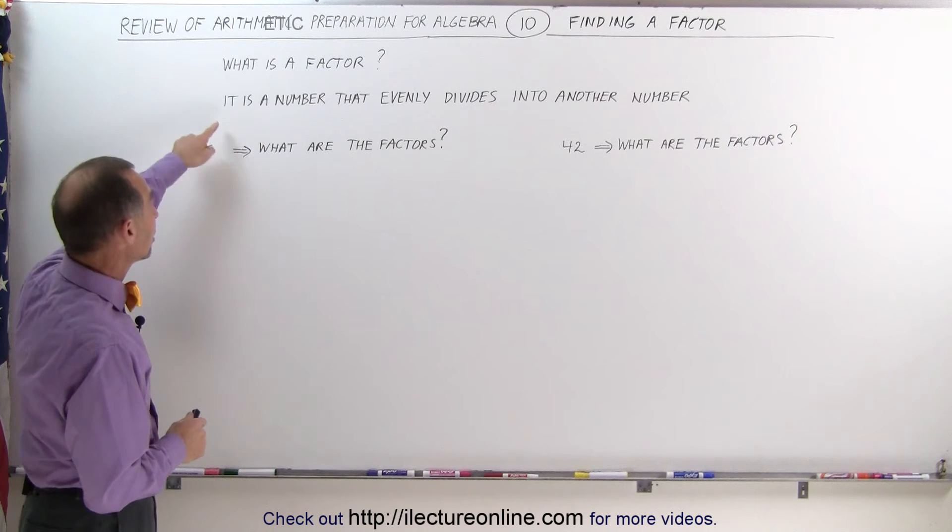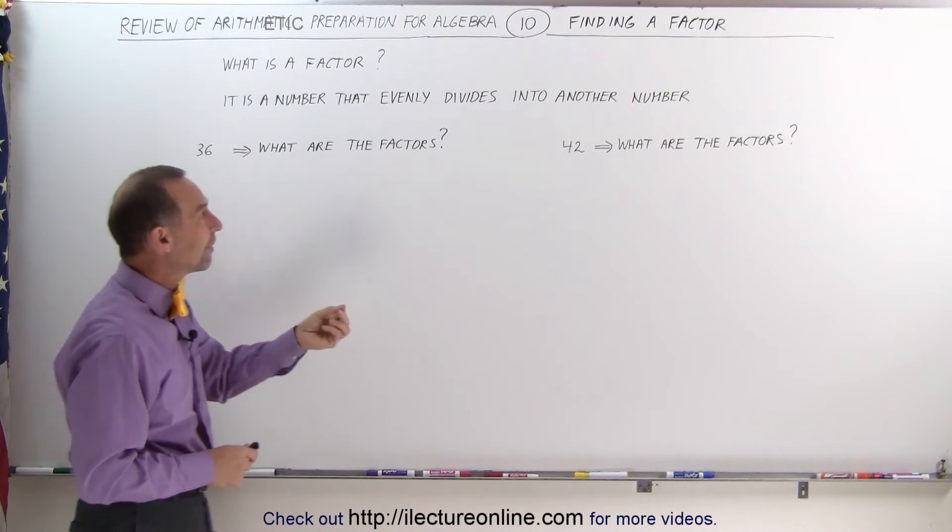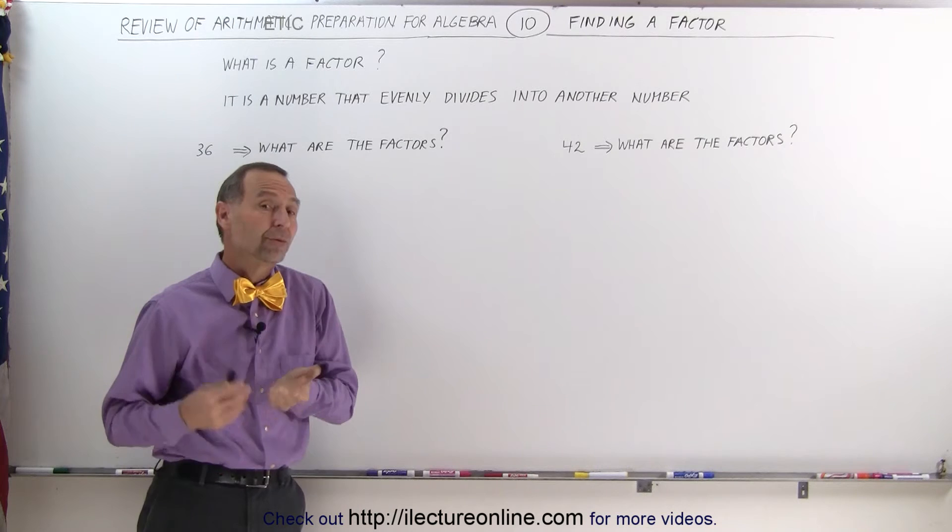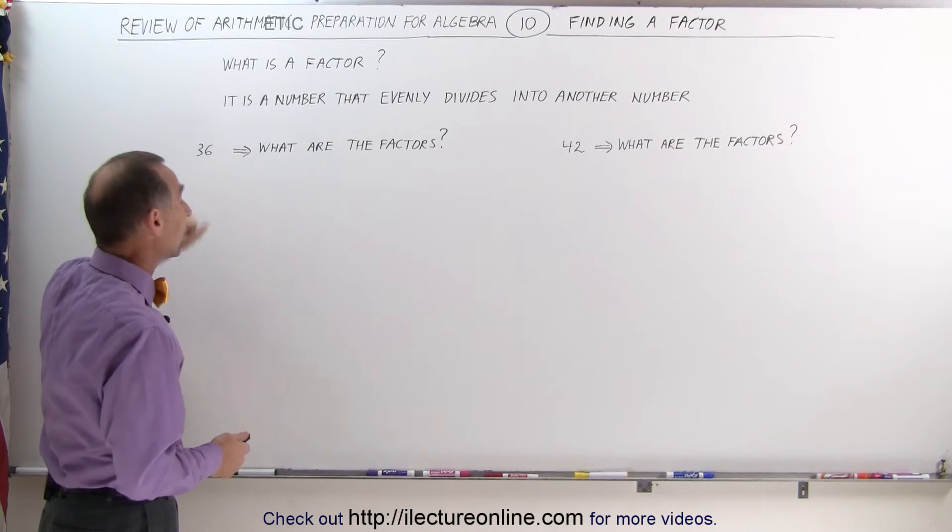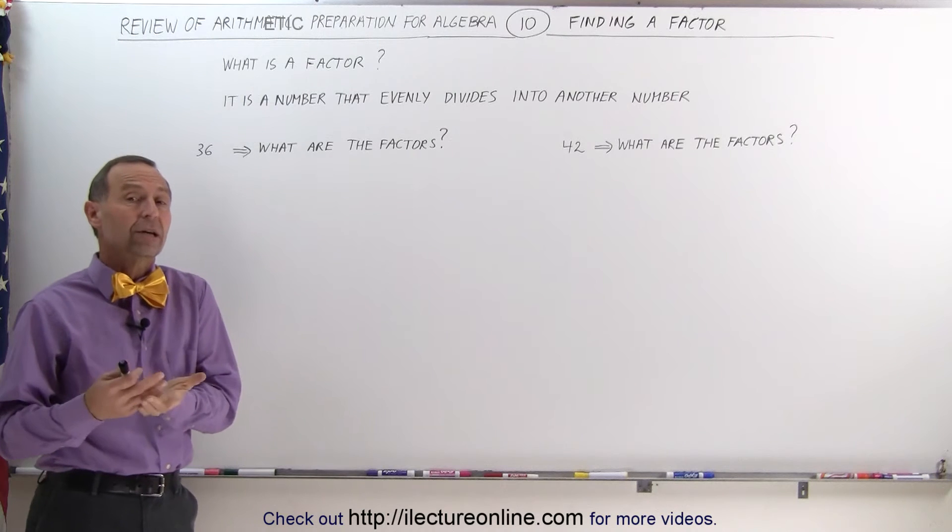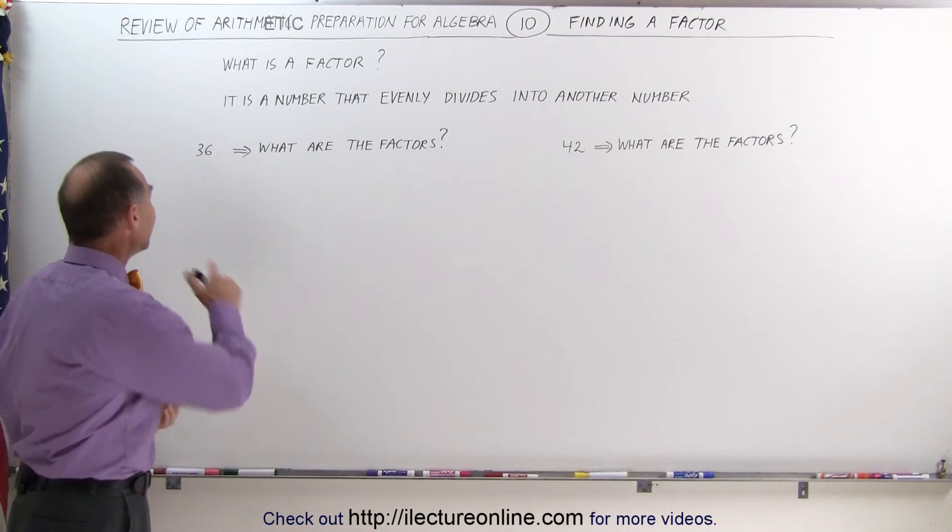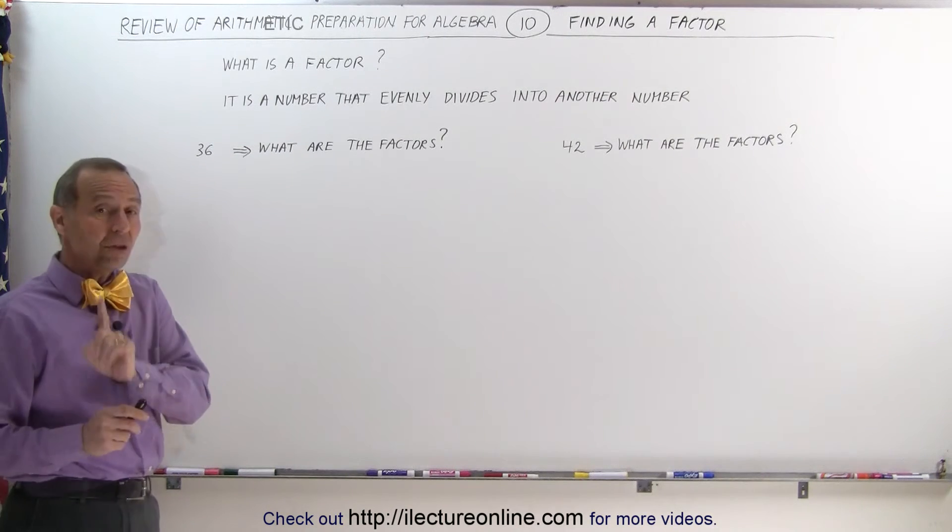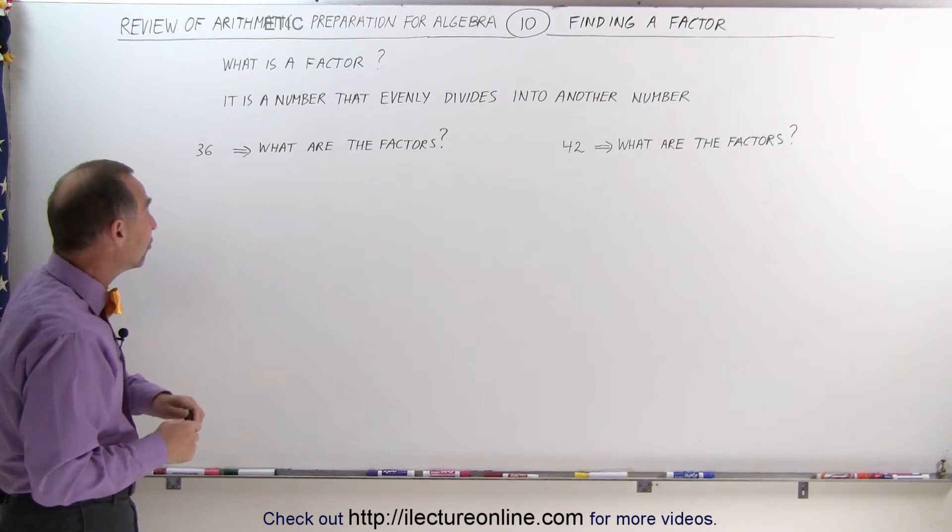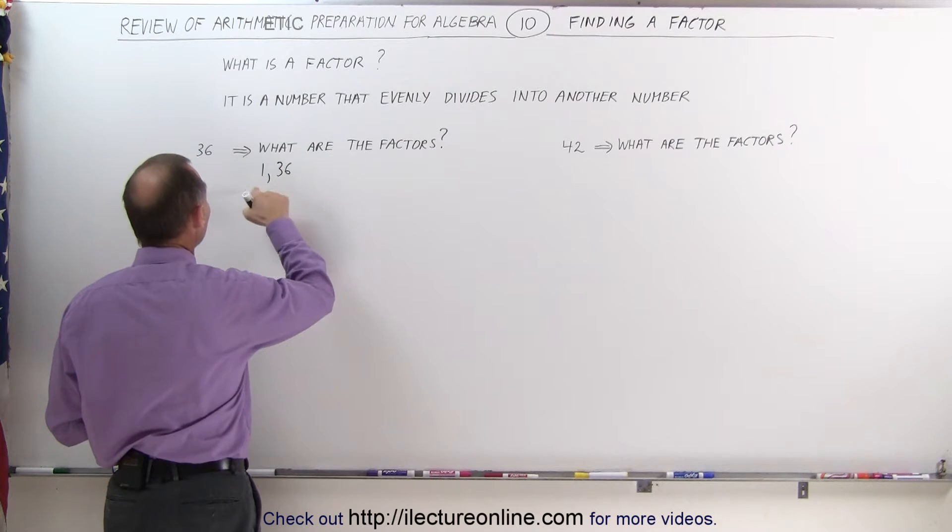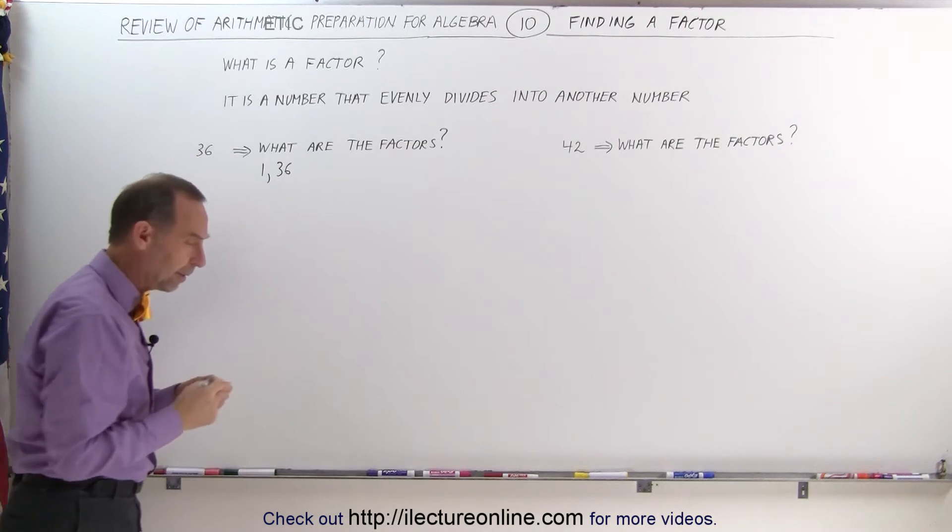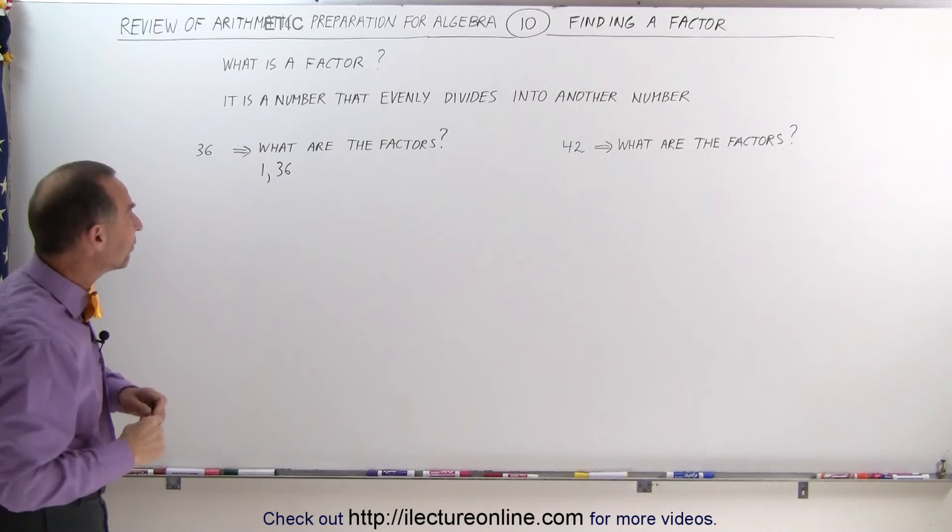The explanation is that it is a number that evenly divides into another number. For example, if we take the number 36, what are the factors of the number 36? What numbers evenly divide into 36? And it does include the number 1 and itself. In other words, 1 and 36 are factors of 36.